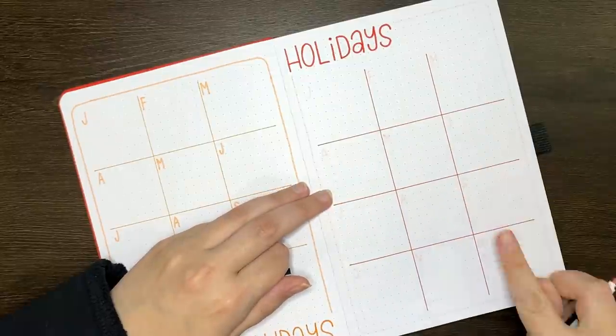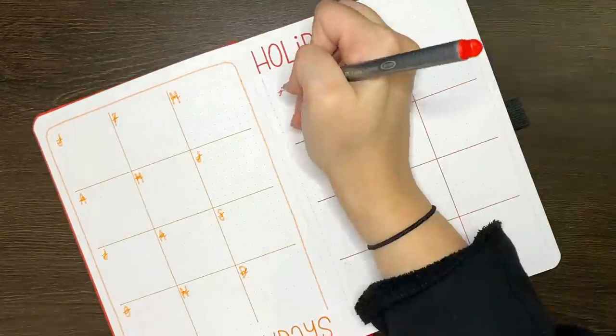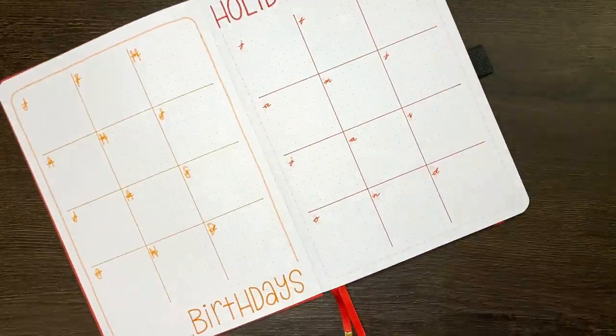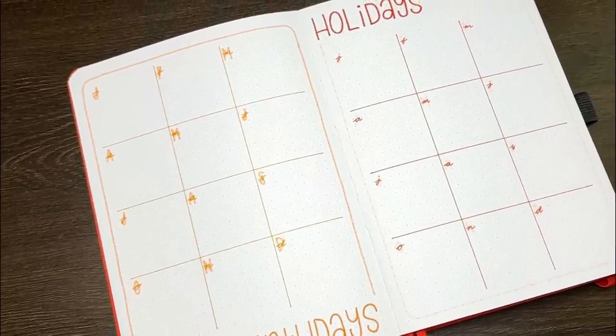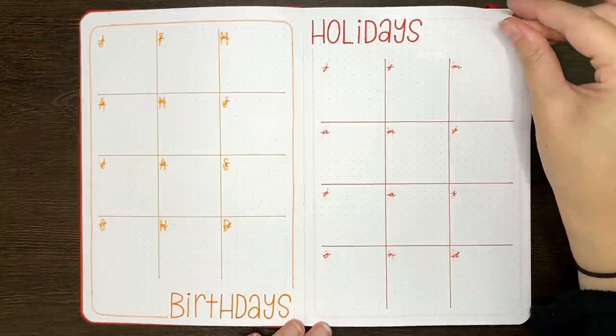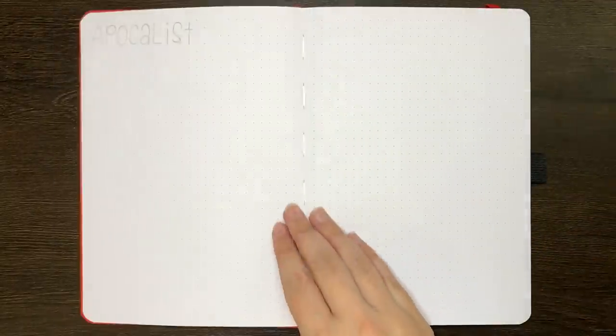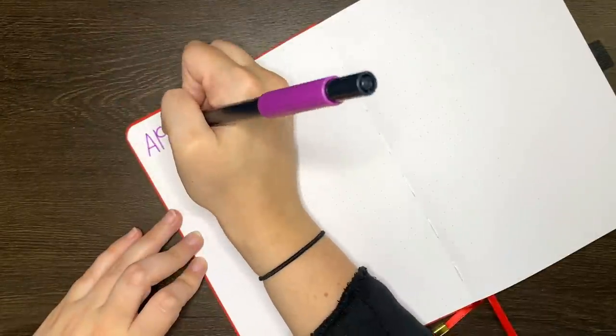Similar to my last long-term collections bullet journal, I wanted to make the setup of these pages quite straightforward, so no complicated designs or doodles. One of the issues that I found with my first long-term collections journal was that when I started making the page designs a little more complicated and a little more decorative, I then felt like I had to continue with that, like each new page had to kind of live up to the design elements of the last one.